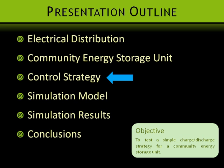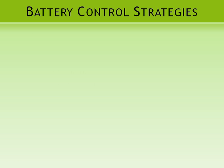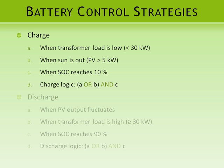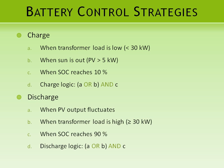Let's take a look at the control strategy used for the storage unit. The unit charges when the transformer load is low or when the sun is out. In either case, the state of charge must have reached 10%. The unit discharges when the PV output fluctuates or when the transformer load is high, which is considered to be above 30 kW. Also in either case, the state of charge must be at least 90%. Although these strategies are preliminary, they help to quickly size the storage unit and give a first look at what the demand will be.